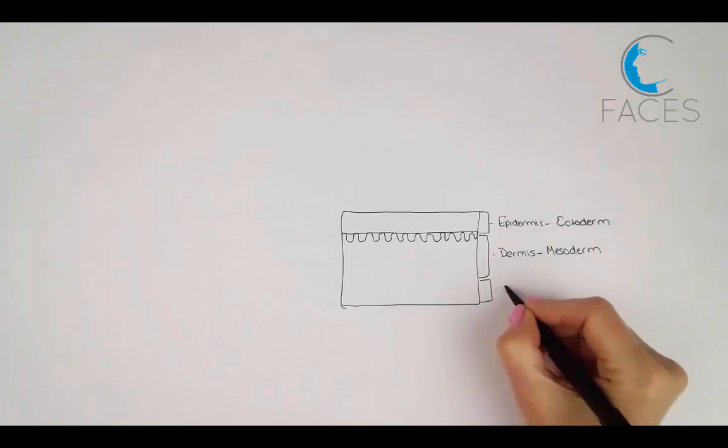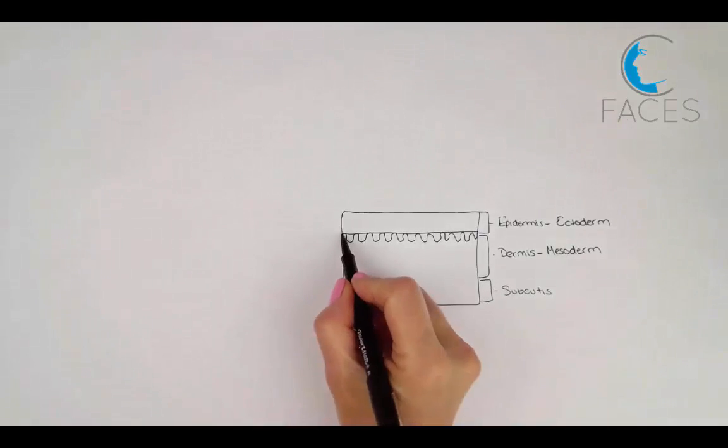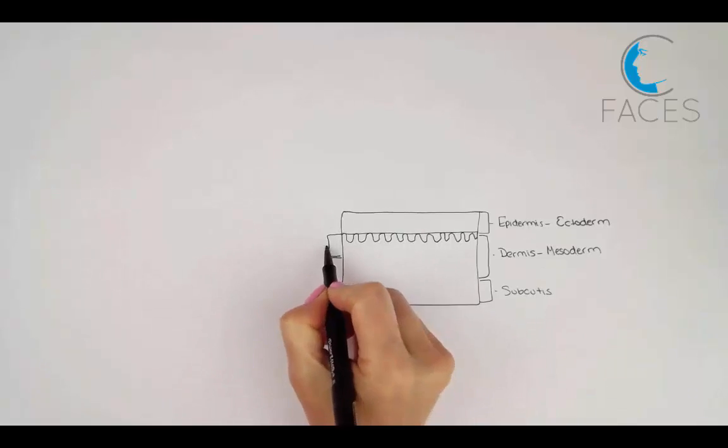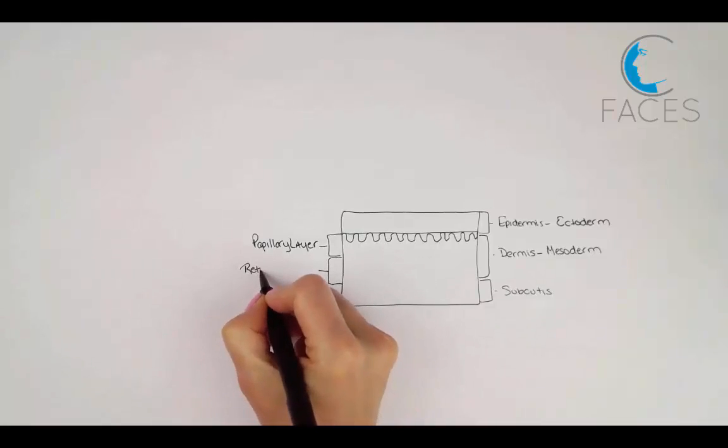The hypodermis, or subcutis, is a layer of connective tissue containing pads of adipocytes, better known as fat. The dermis is further broken down into the papillary layer and the reticular layer.